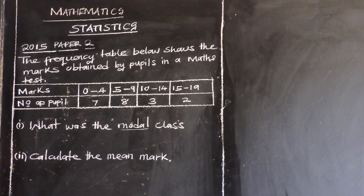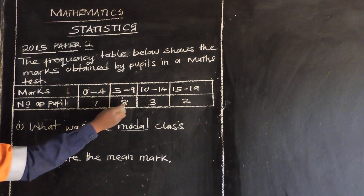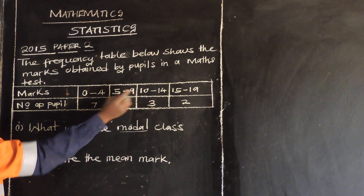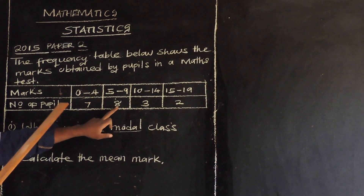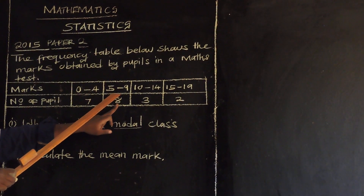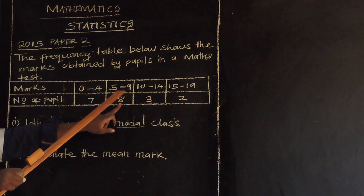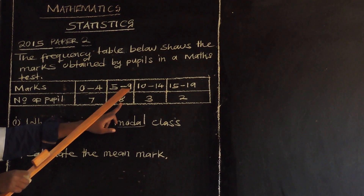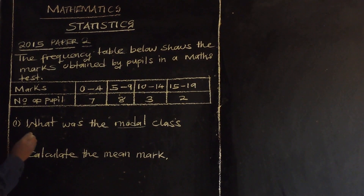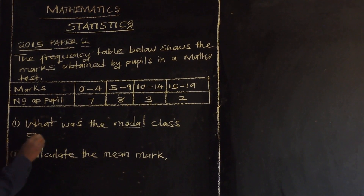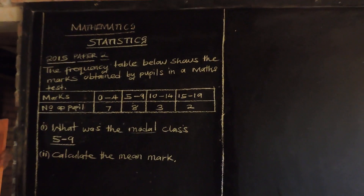So which range has the highest number of pupils? Look at this one — it's 5 to 9, because there are 8 pupils. Since this range is the one with the highest number of pupils, it becomes our modal class. So our modal class is 5 to 9. This is our answer.